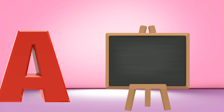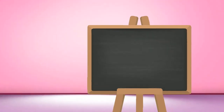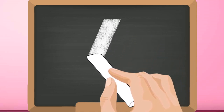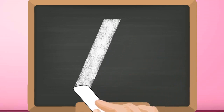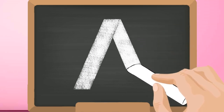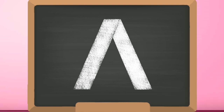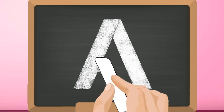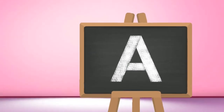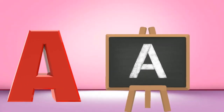A, capital A. Start from the top and draw a slanting line downwards. Go to the top and draw another slanting line down to the opposite side. Now, go a little below the middle and draw a slanting line — the cross. Capital A.